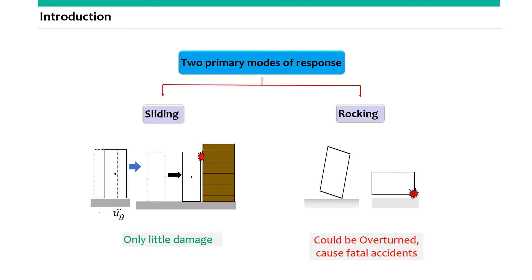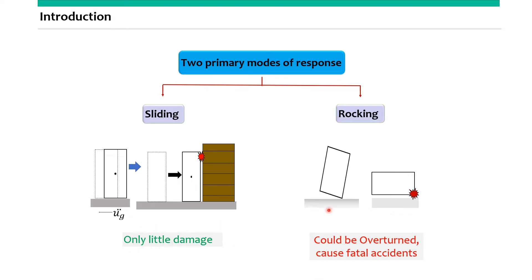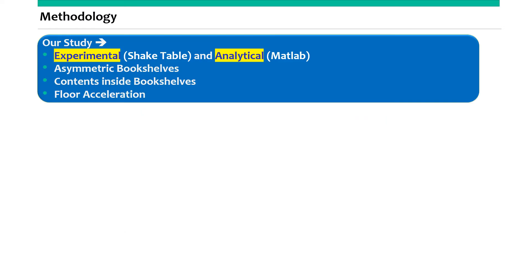In non-structural components, there are two primary modes of response: one is sliding and the other is rocking. Sliding causes only little damage; however, rocking can cause serious accidents. We considered an experimental study using a shake table.